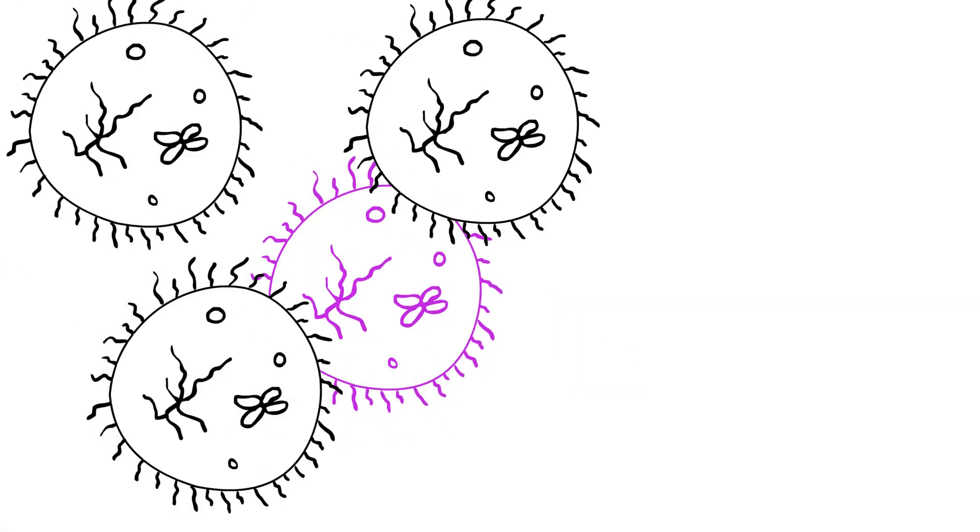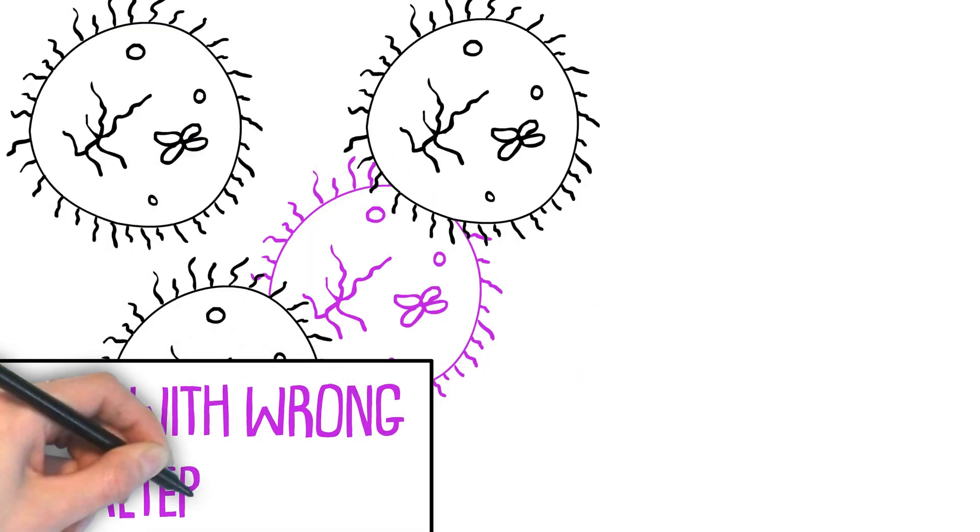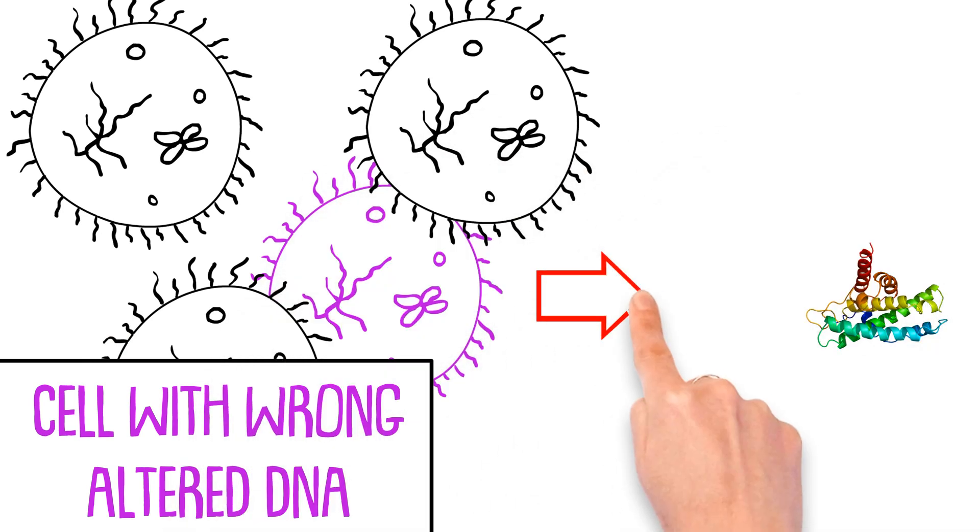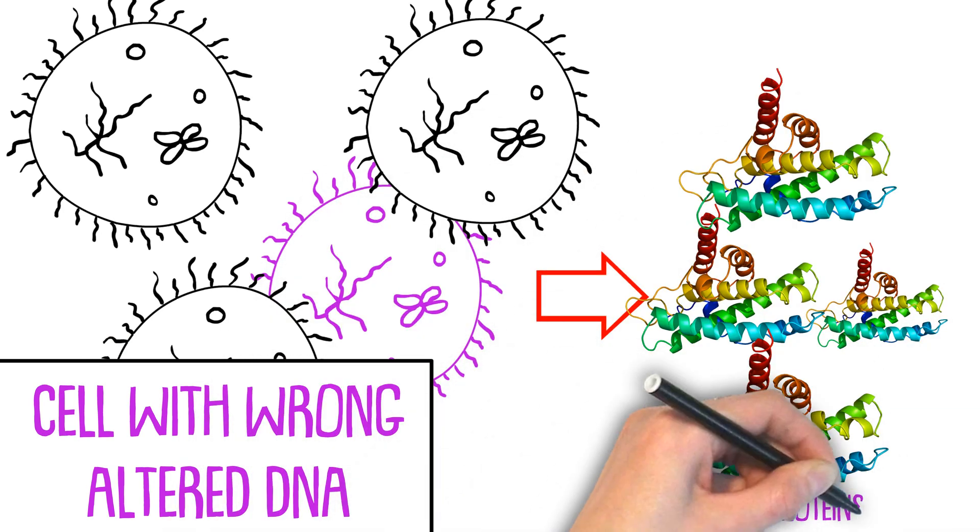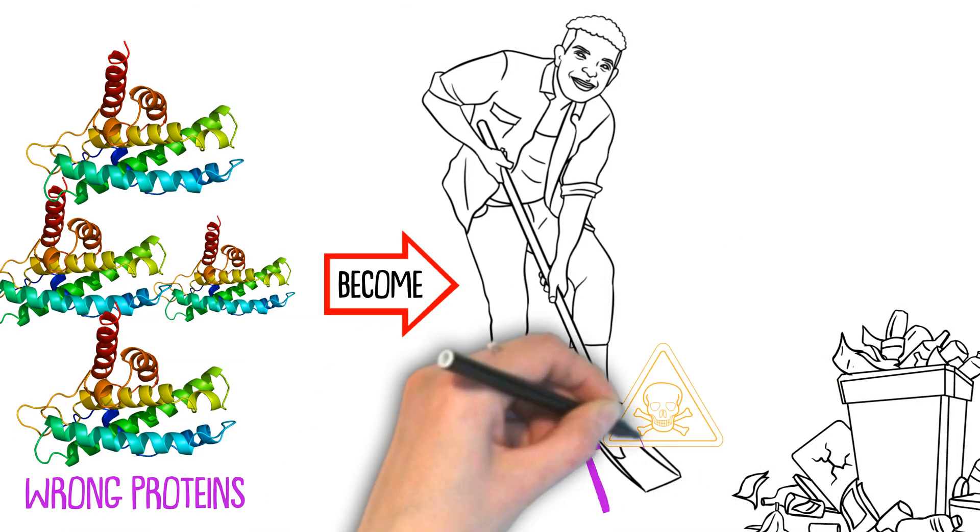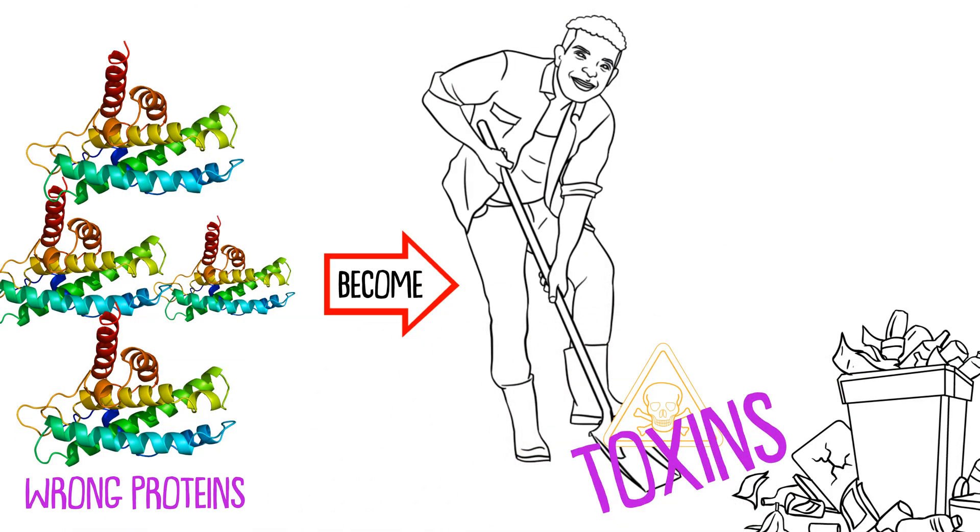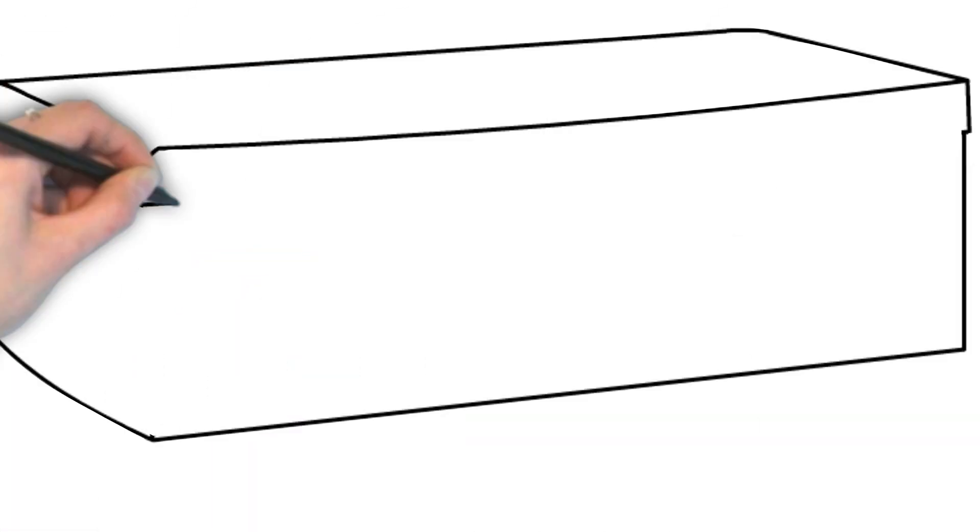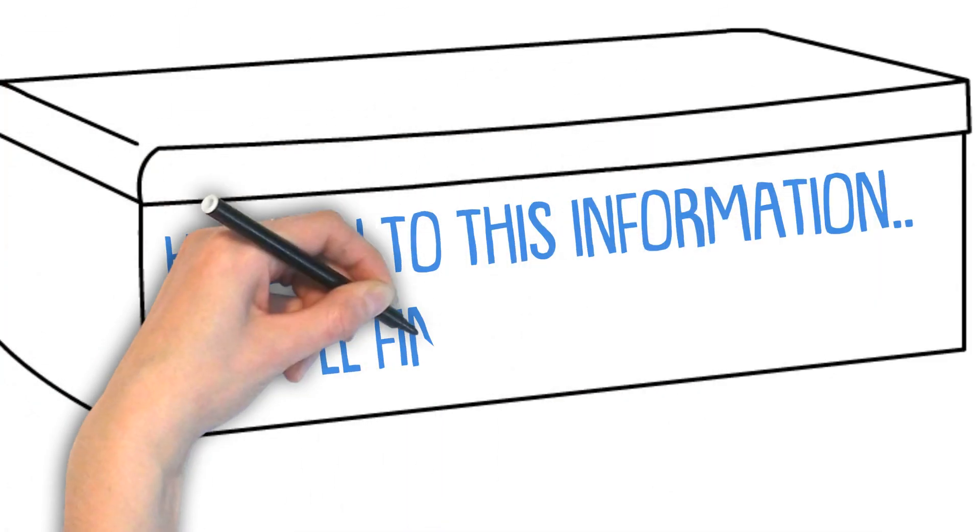However, if these cells with the wrong DNA don't get killed by your immune system, they'll continue producing the same wrong proteins in a cycle. These won't be called proteins anymore, but toxins, since your body cannot do anything with them and needs to get rid of them. Keep this in the back of your head. We'll come back to it in a second.